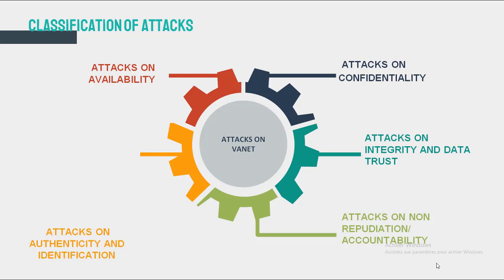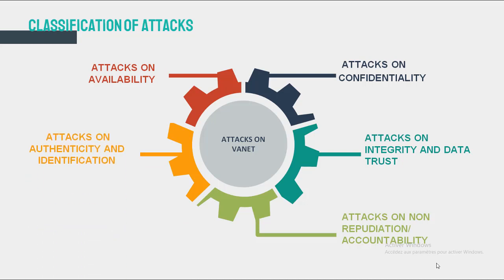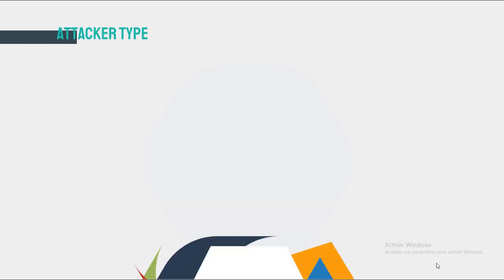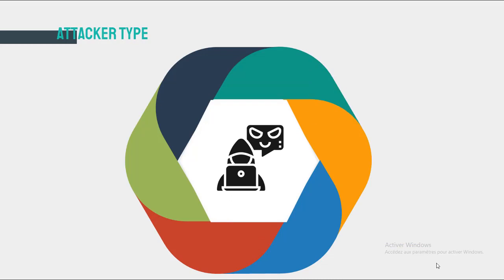Attack on authenticity and identification: authenticity protects the VANET network from internal and external attacks, and any violation of authenticity can cause attacks like cyber attacks. Let's look at another aspect of classification, which is the attacker profile.